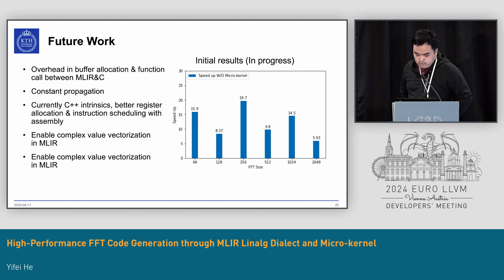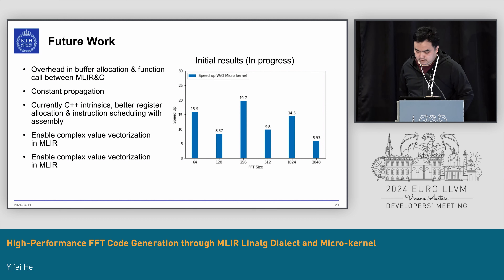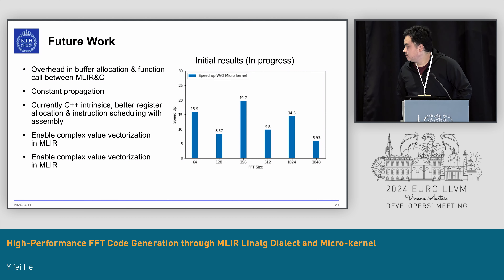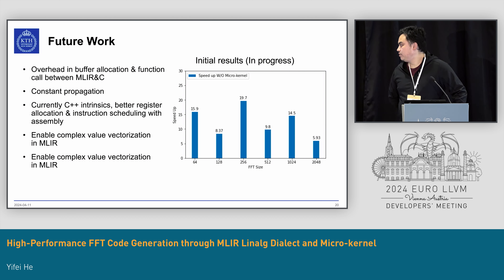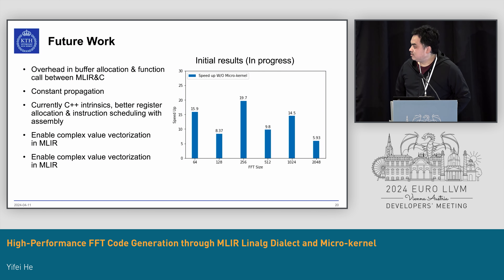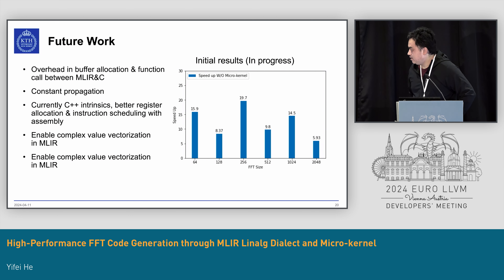One possible optimization is constant propagation, which currently doesn't work very well — in the DFT matrix there are many ones and zeros that haven't been optimized out yet. Also, the current microkernels use C++ intrinsics; for better control of register allocation and instruction scheduling, it would be better to rewrite them in assembly. More generally, our work is to explore the potential of complex arithmetic optimizations on performance. Eventually, we want to introduce these vectorization and optimization patterns into MLIR and make them automatic in the compiler.